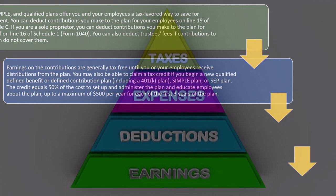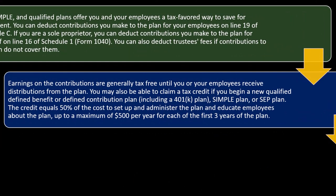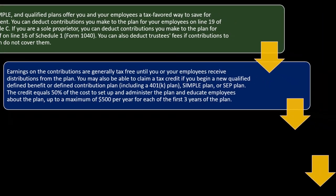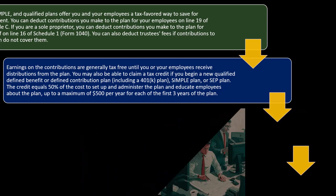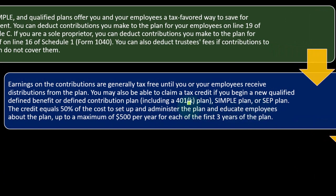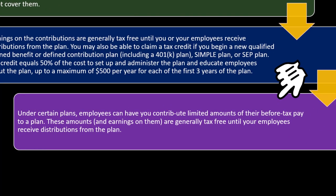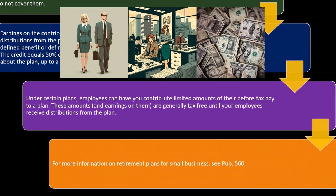You may also be able to claim a tax credit if you begin a new qualified defined benefit or defined contribution plan, including a 401k plan, SIMPLE plan, or SEP plan. The credit equals 50% of the cost to set up and administer the plan and educate employees about it, up to a maximum of $500 per year for each of the first three years of the plan. Under certain plans, employees can contribute limited amounts of their before-tax pay to the plan, and those amounts and earnings on them are generally tax-free until the employee receives distributions.